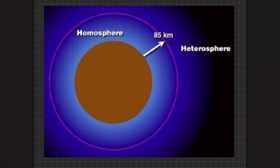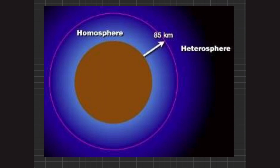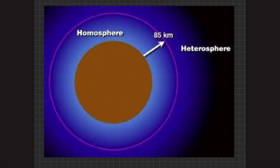Apart from troposphere, stratosphere, mesosphere, and thermosphere, the Earth's atmosphere is also divided into two major components: the homosphere and the heterosphere. From Earth's surface to a height of about 85 kilometers, the atmosphere is called the homosphere, and above 85 kilometers it is called the heterosphere. The homosphere is named so because of the uniform composition of gases within this region, whereas in the heterosphere the composition of gases is not constant.